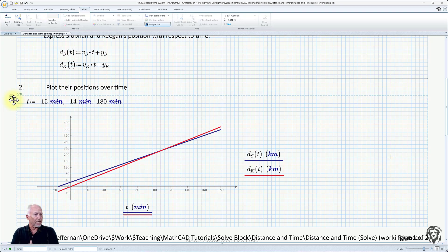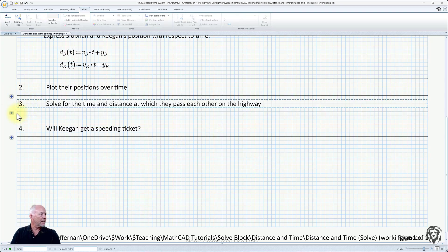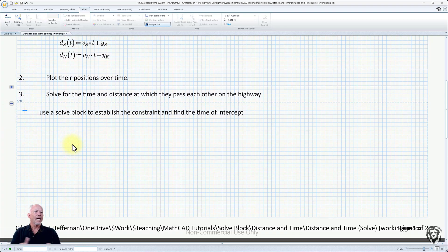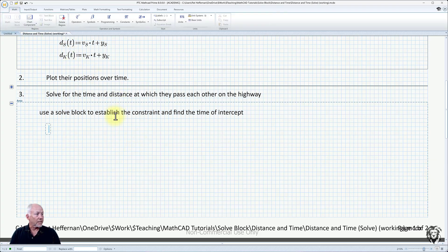Now we get to the meat of it. We get to use the solve block and see if we can't figure out exactly when they overlap and answer the question that was posed. Let me collapse that. We're going to go down to the solve block itself. It says use the solve block to establish the constraint and find the time of the intercept. First thing I'm going to do is actually input the solve block here. Under the math tab, second one over is the solve block. It's broken up into three components. We have the guess value, it's a numerical process so we start with a guess value and it will iterate to the solution. We then define any constraints, and then tell it what we want to find.